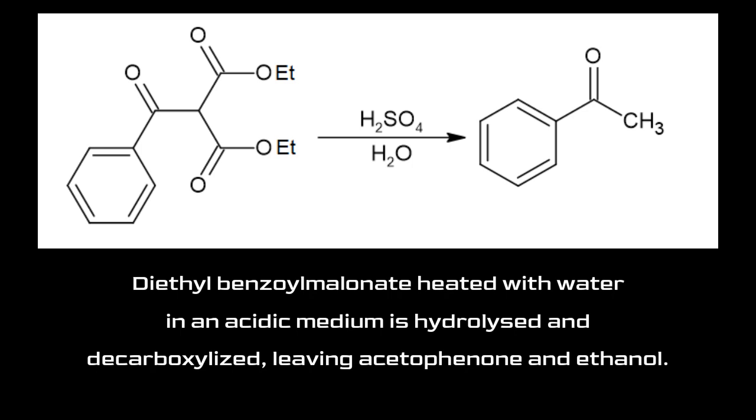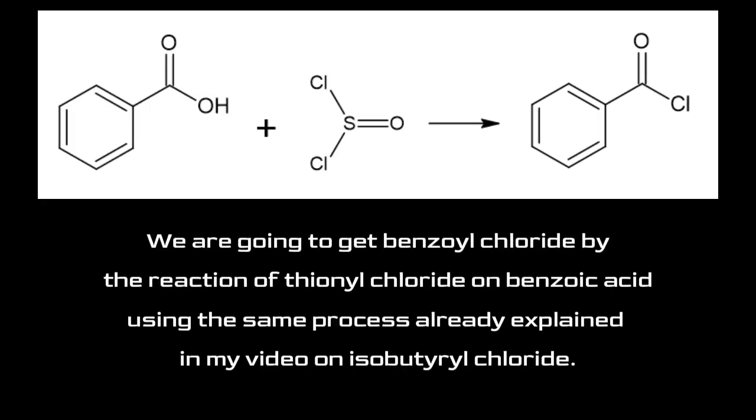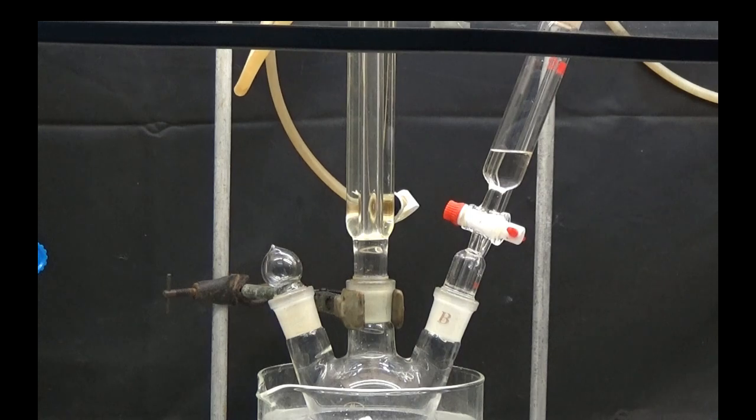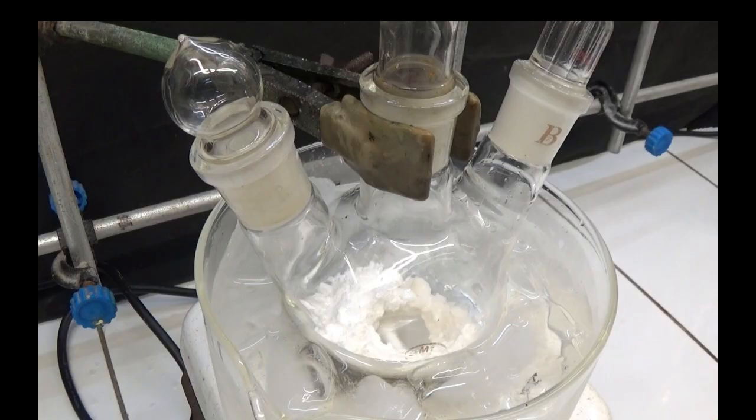leaving acetophenone and ethanol. We are going to get benzoyl chloride by the reaction of thionyl chloride on benzoic acid, using the same process already explained in my video on isobutyryl chloride.